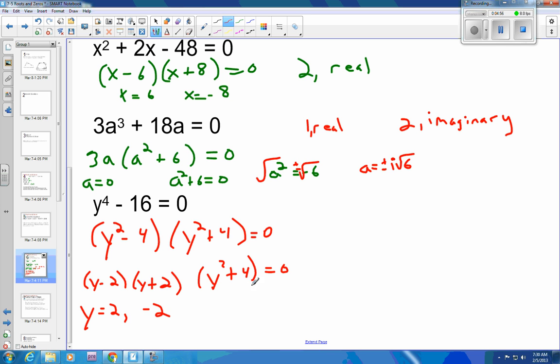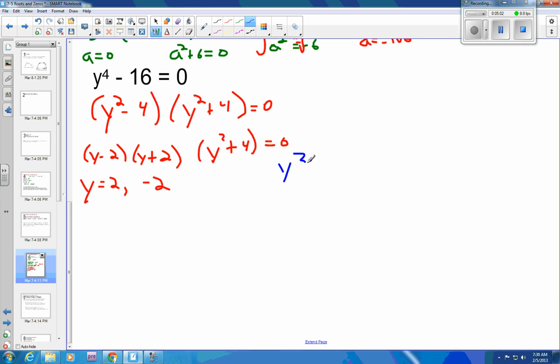And then on this side I need to go that y squared plus 4 equals 0 so y squared equals negative 4, we'll subtract 4 from both sides and then you want to square root both sides and that makes this plus or minus. So y is equal to a positive or negative, square root is 2, square root of negative 4 is positive or negative 2i. So this has two reals and it has two imaginaries.